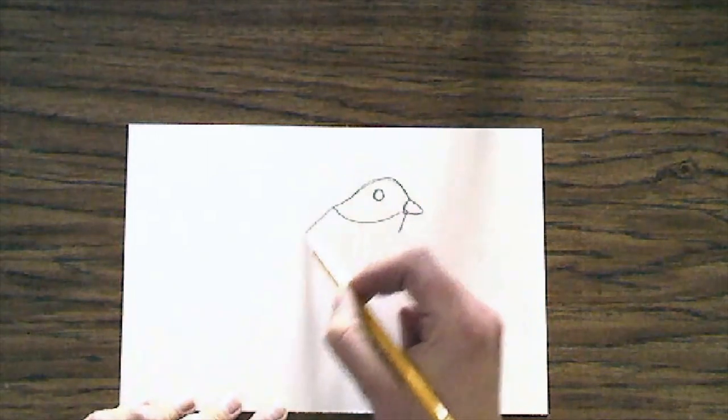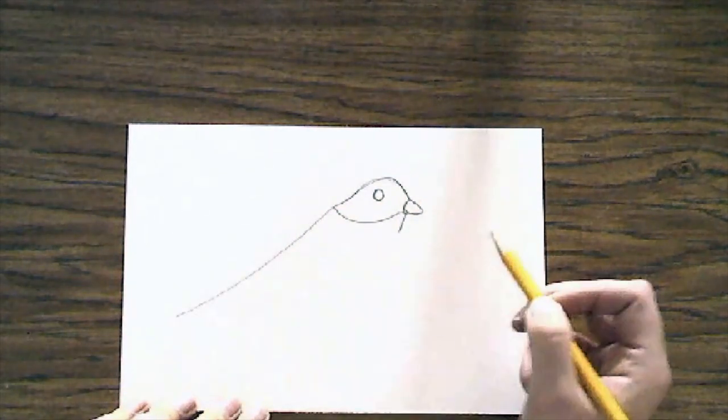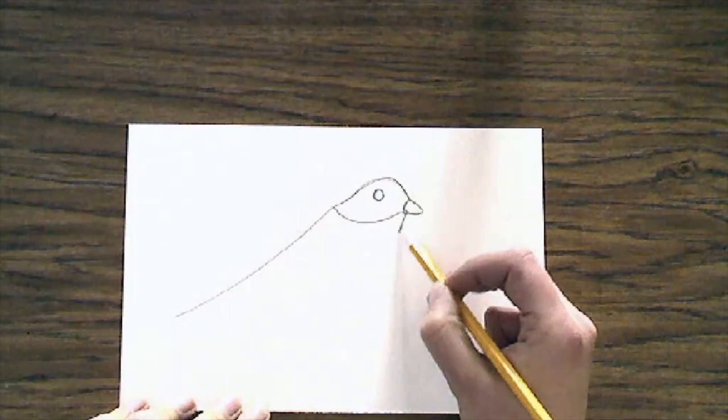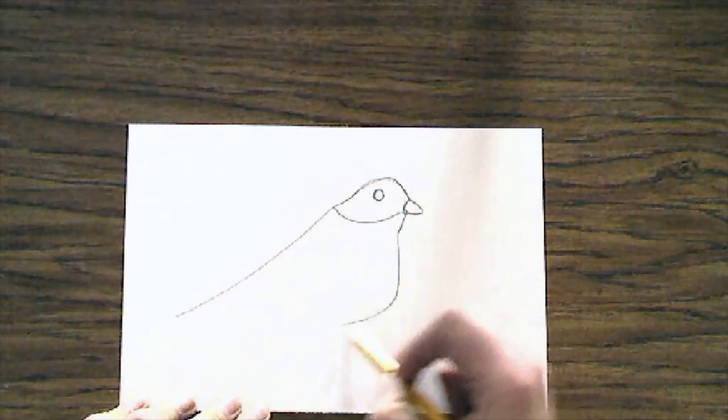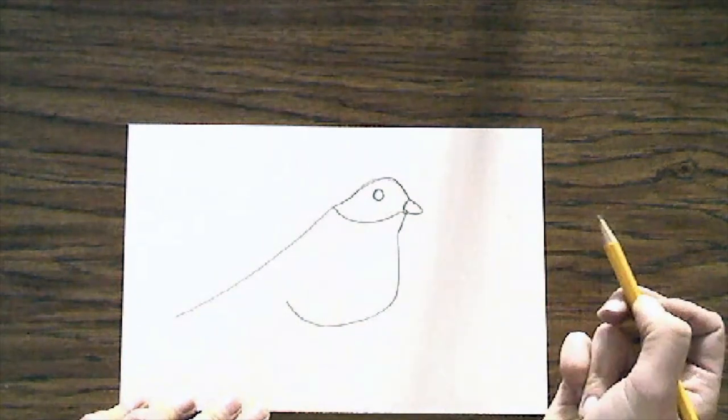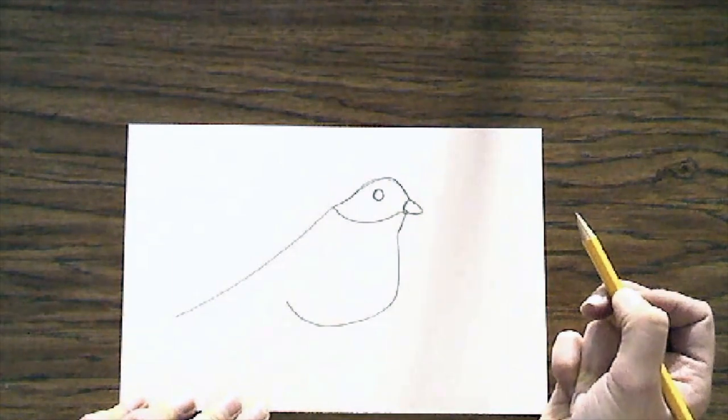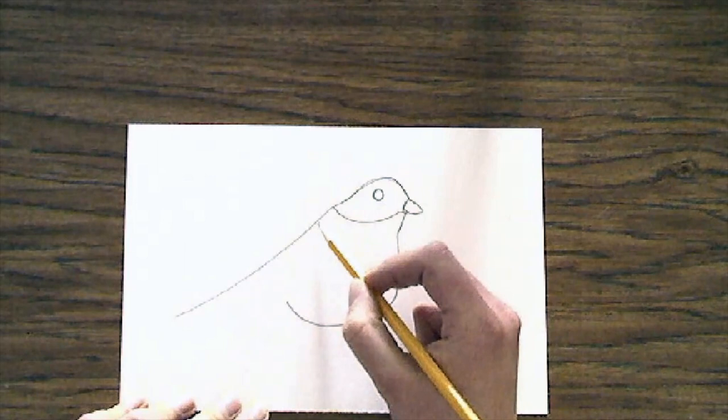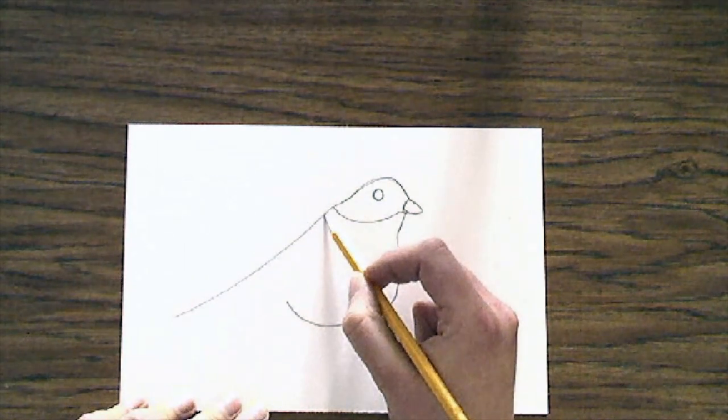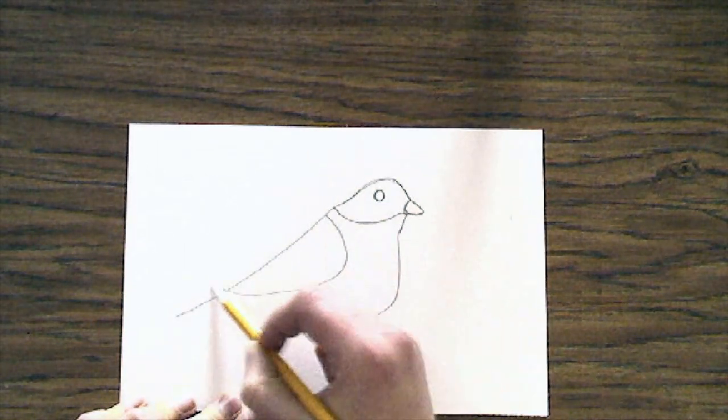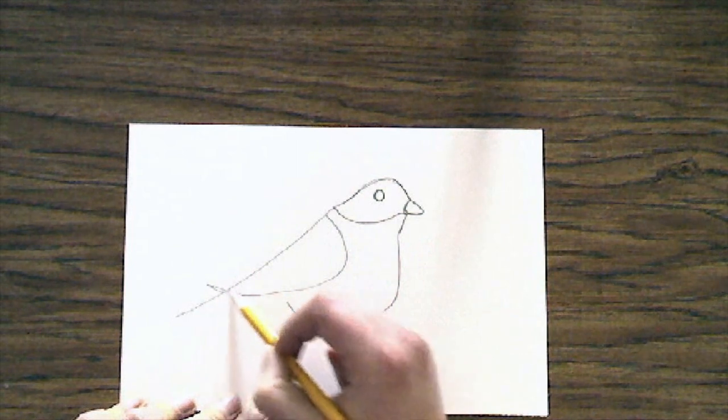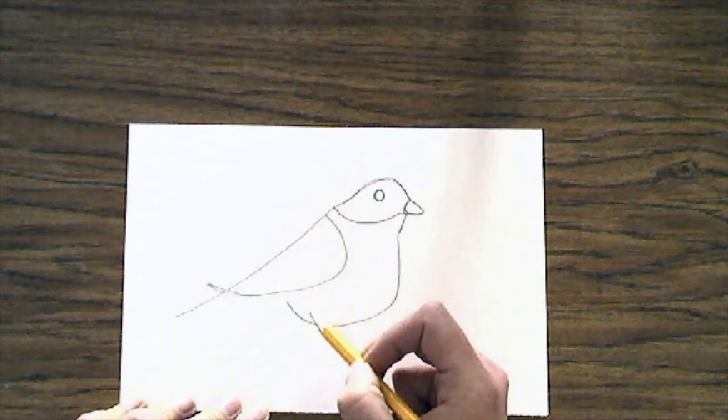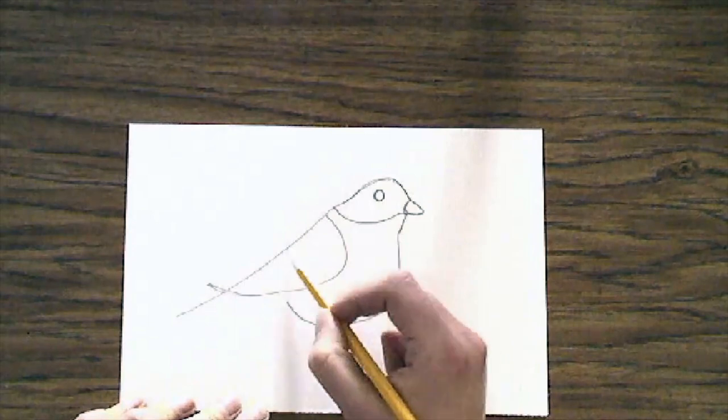Now we're going to go ahead and make a long straight diagonal line down for his back. Part of this line is going to be his tail. Let's curve his belly in just like that. You can make your bird a little chubby if you like. There's nothing wrong with a little chubby bird. Now let's make a curved line for the wing. I'm going to extend it out just a little bit so I can have some longer feathers for the wing.